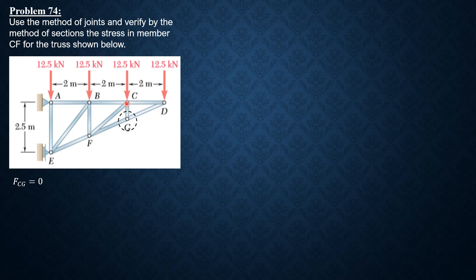We proceed to joint C. Since CG is zero, there are three members at joint C, and CF is unique. The direct equation to solve for CF is summation of forces in Y equals zero. We need to determine the inclination or angle that CF makes with the horizontal before we proceed.